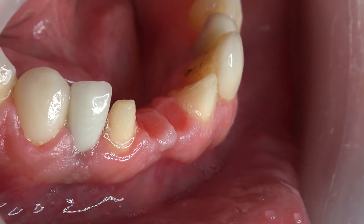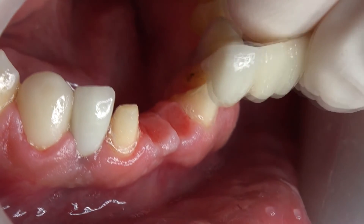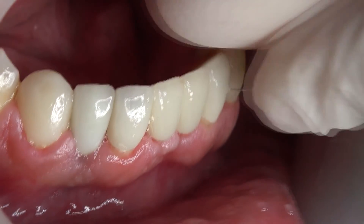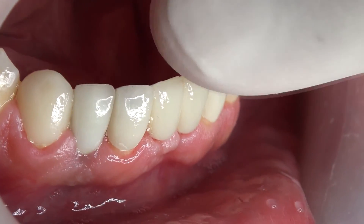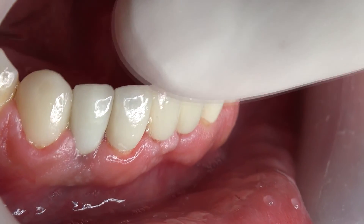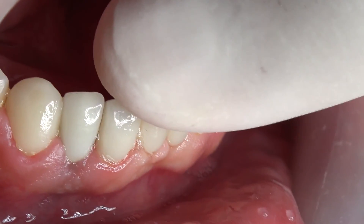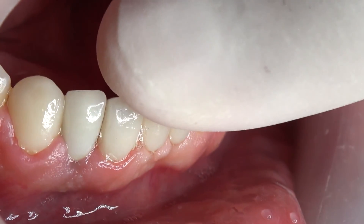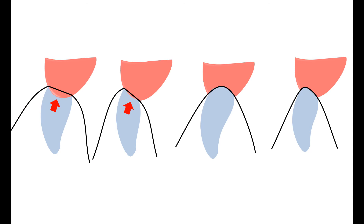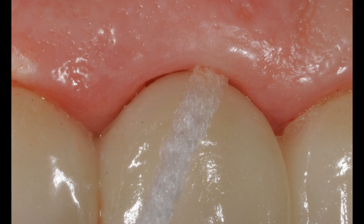The soft tissue has also preserved its position horizontally and the aesthetic emergence profile has been achieved. If everything has occurred as desired, the prosthetic restoration can be cemented definitively. The most important point after this is the ultimate care of the patient, especially in the pontic area with appropriate cleaning tools. The patient should be recalled in six-month periods to control whether ideal hygiene is maintained or not.